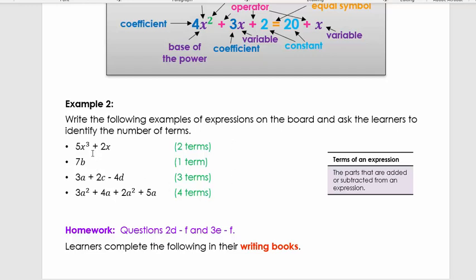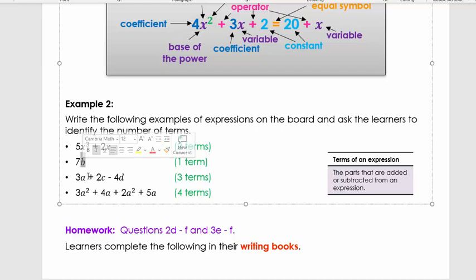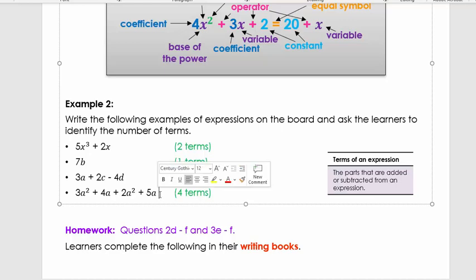So the terms are divided by a symbol. Here we have two terms and it's divided by the plus symbol. Here we only have one term because it's only got a number and it's got a variable. The next example, we have three terms because we got a plus there and a minus. So we got one term, two terms, three terms. And the last one we have is divided into four terms.